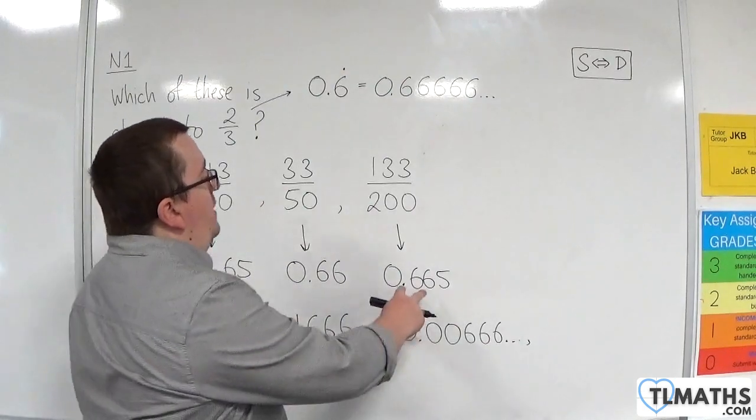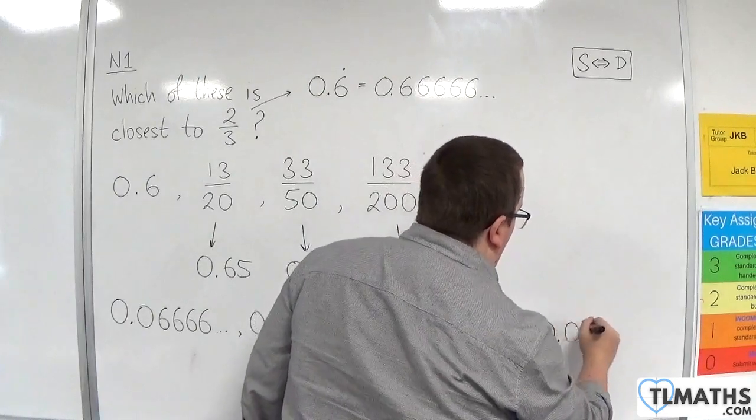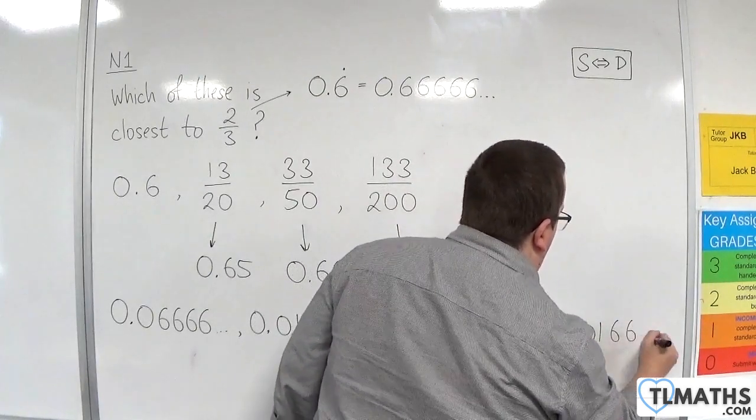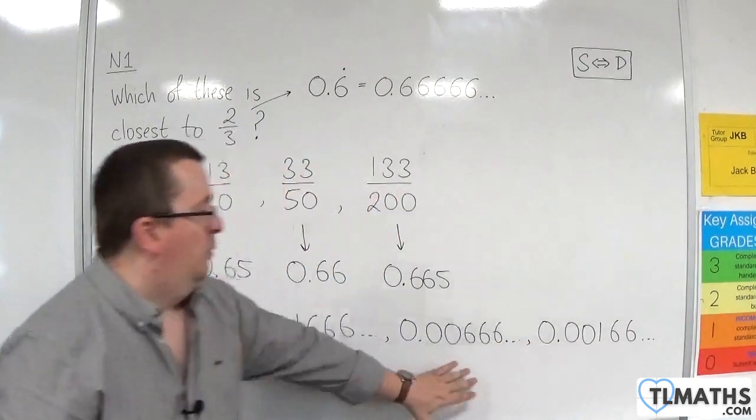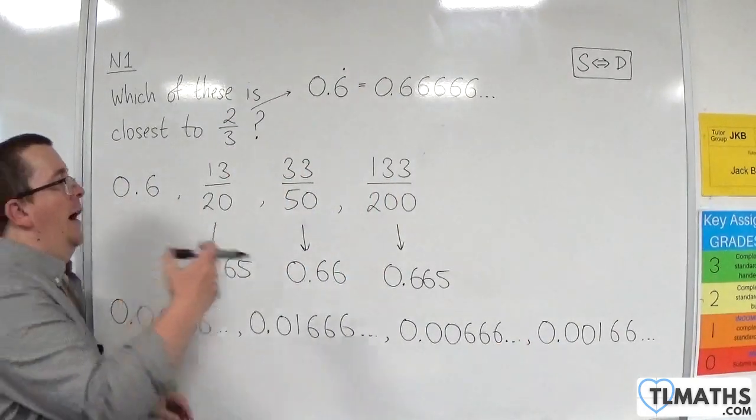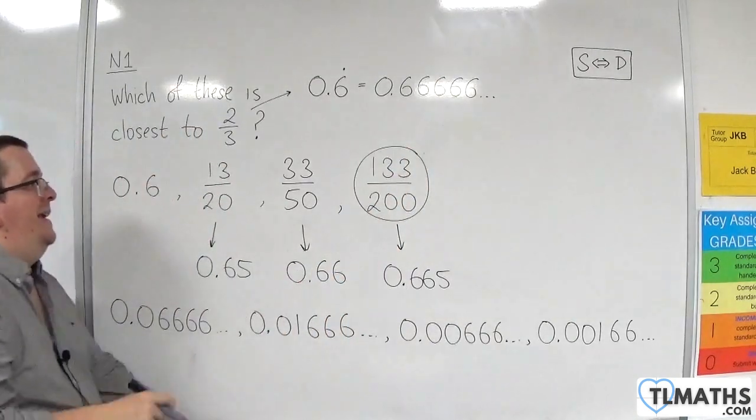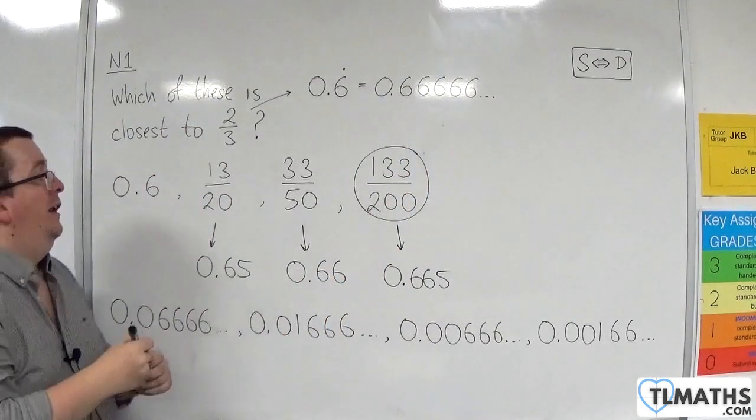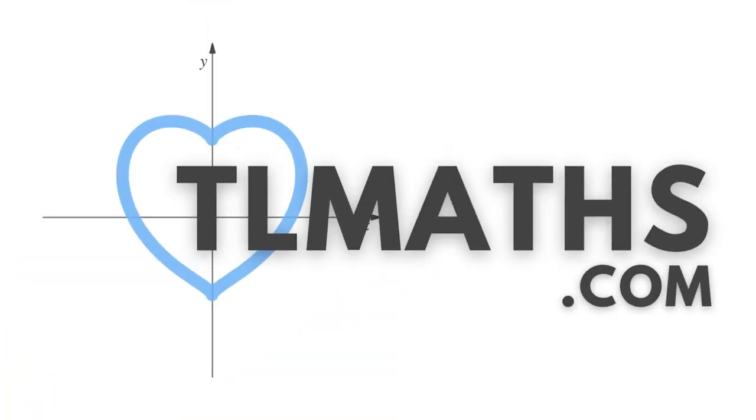Well, if I subtract 0.665 from 0.6 recurring, I would get 0.00166, etc. And of course, that is smaller than that. So, 133 over 200 is the one that is closer, or the closest, rather, to two-thirds. So, 133 over 200.